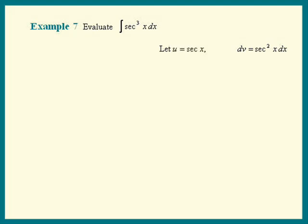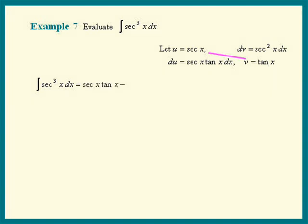Let's find du. du is secant x tangent x dx. And v is tan x. The integral of secant cubed x dx equals u times v — which is secant x tangent x — minus the integral of v du, which is the integral of secant x tangent squared x dx.